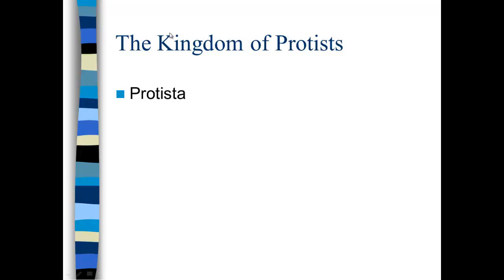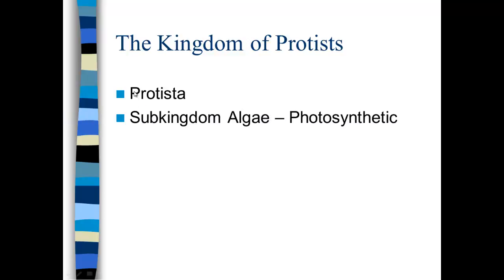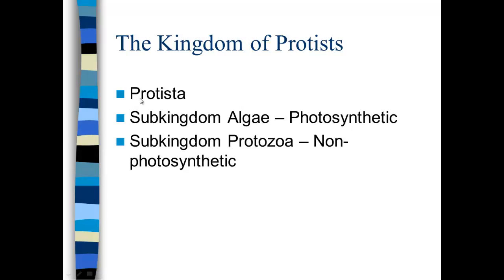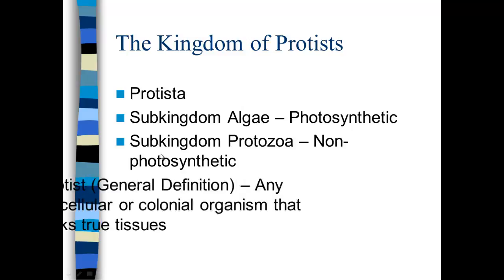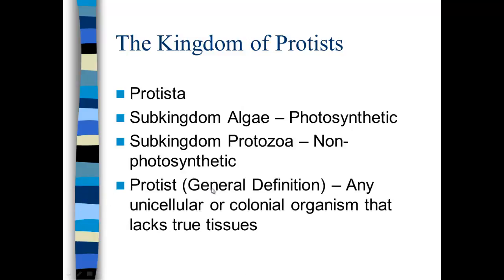Next, let's go to protists. We've talked about fungus; next we'll talk about protists. This is the kingdom Protista, divided into two sub-kingdoms: algae and protozoa. Algae are photosynthetic; protozoa are non-photosynthetic. A general definition: this is any unicellular or colonial organism that lacks true tissues. They do grow unicellularly and also in colonies. They do not form tissues, so they don't have tissue-level organization like you would find in a human being.